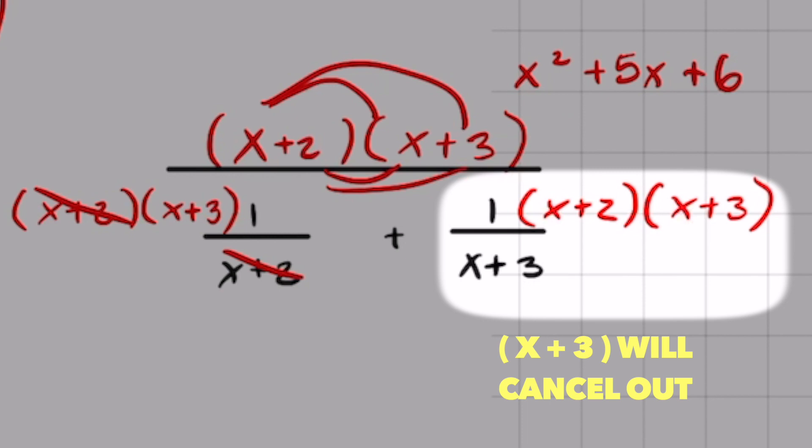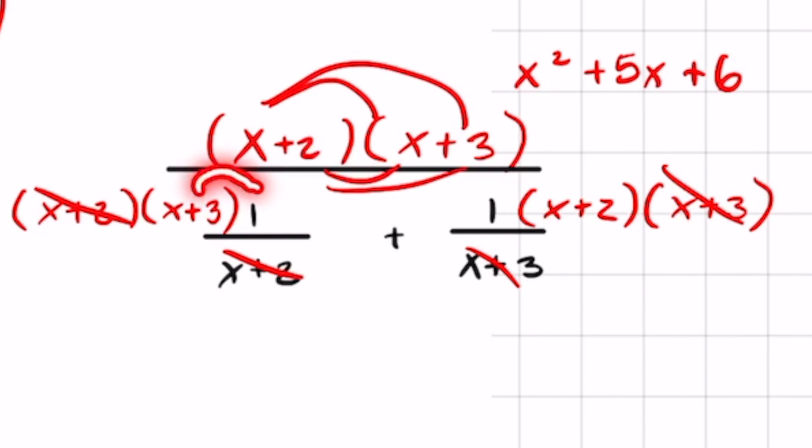And looking at the second term, same thing is going to happen but x plus 3 is going to cancel out and I'm left with x plus 2. 1 times that binomial is just going to be x plus 3. 1 times this binomial is just going to be x plus 2.